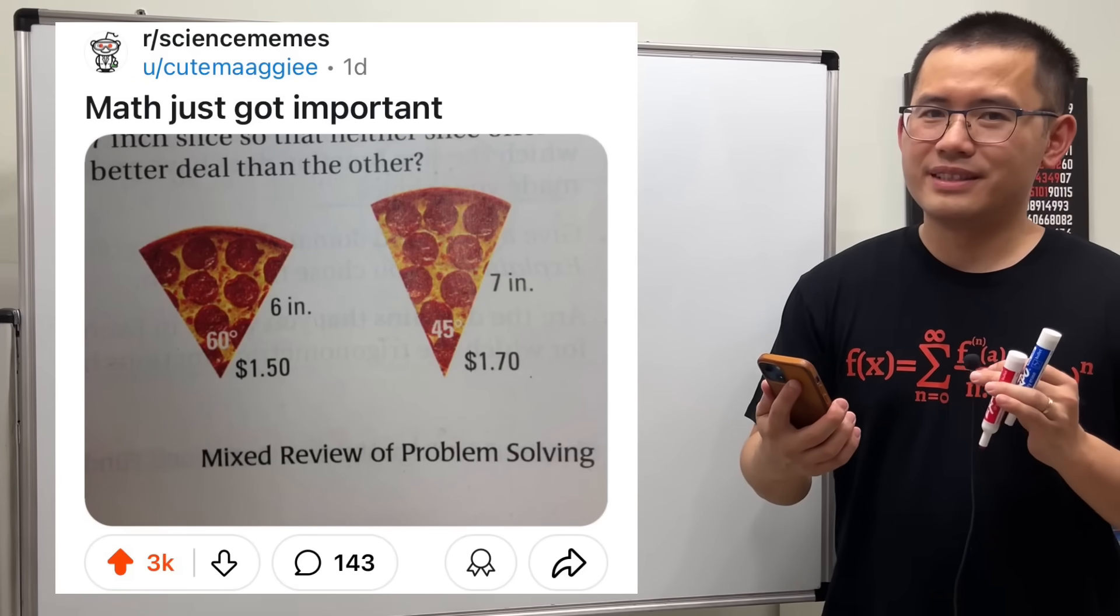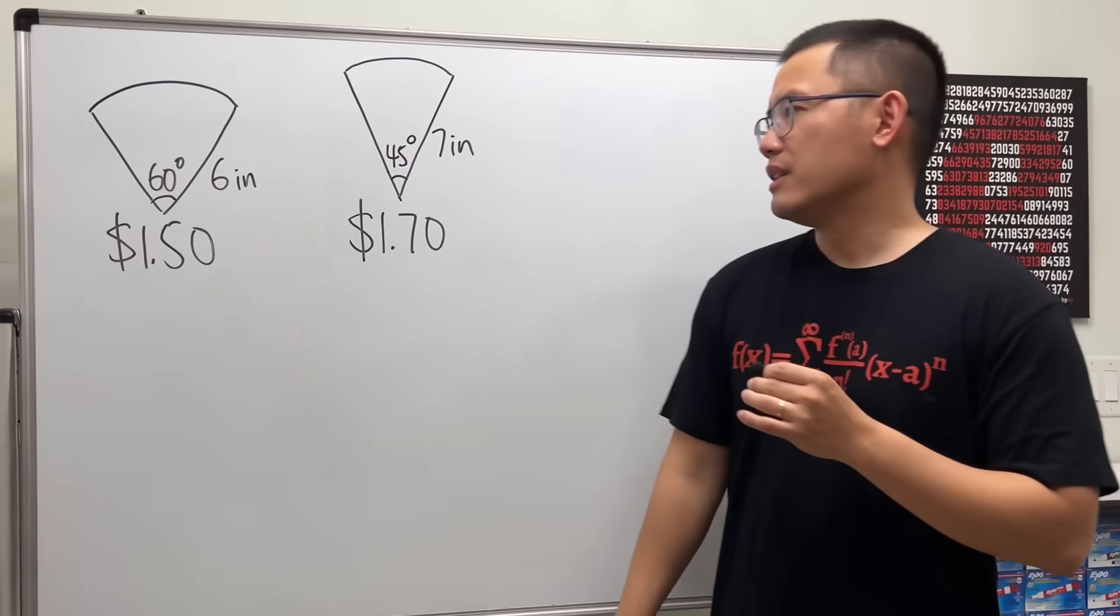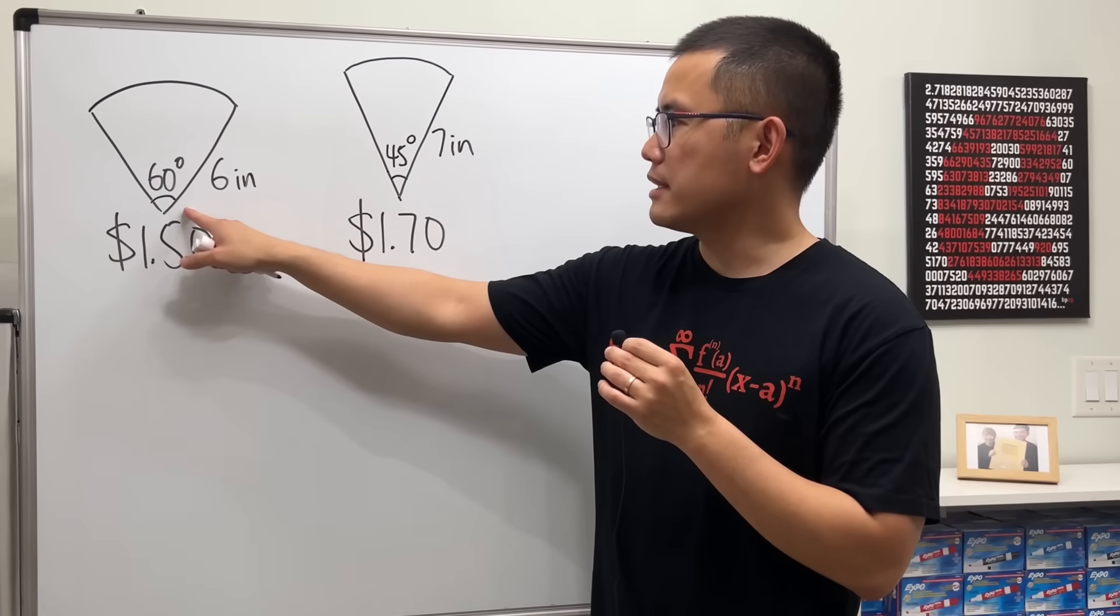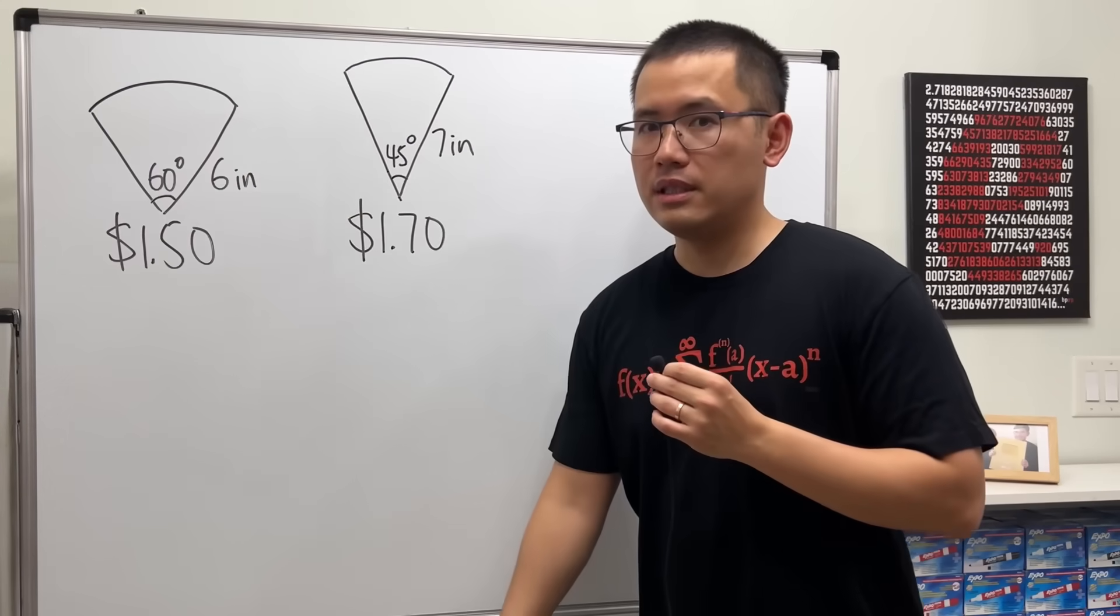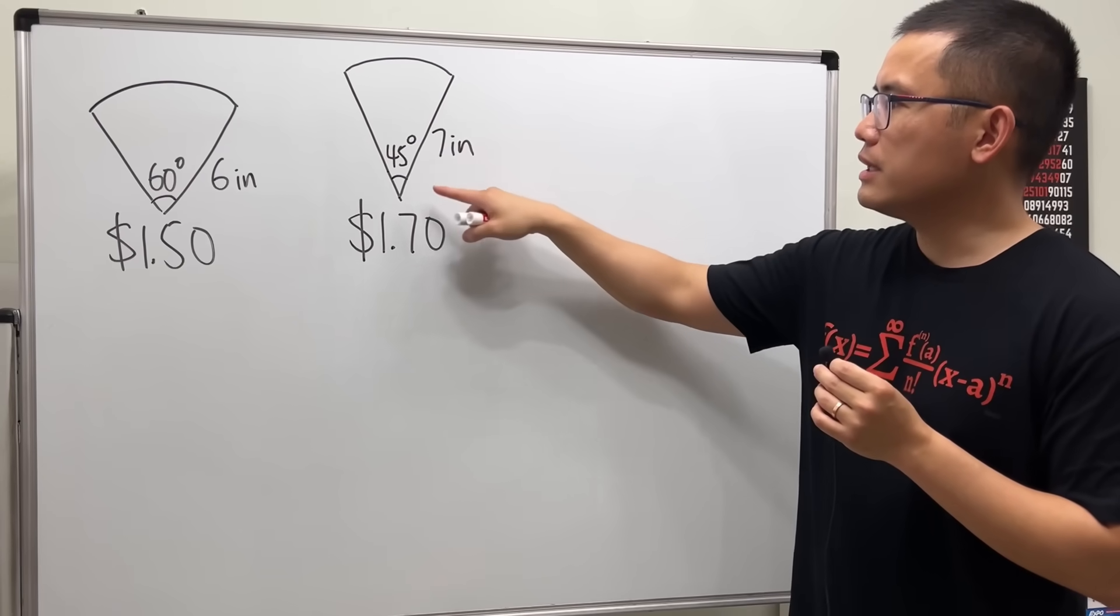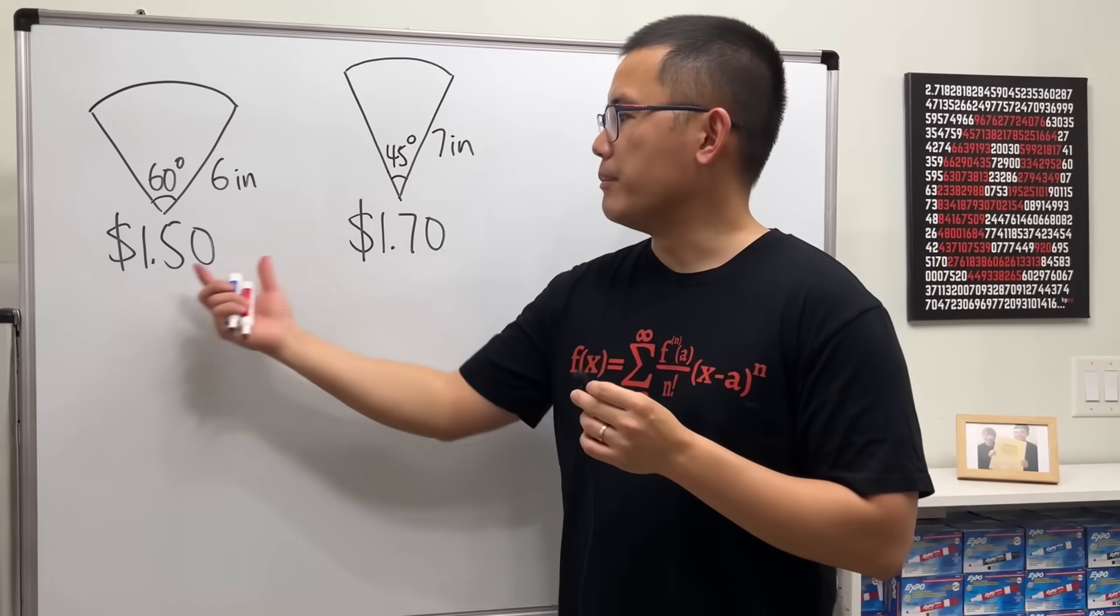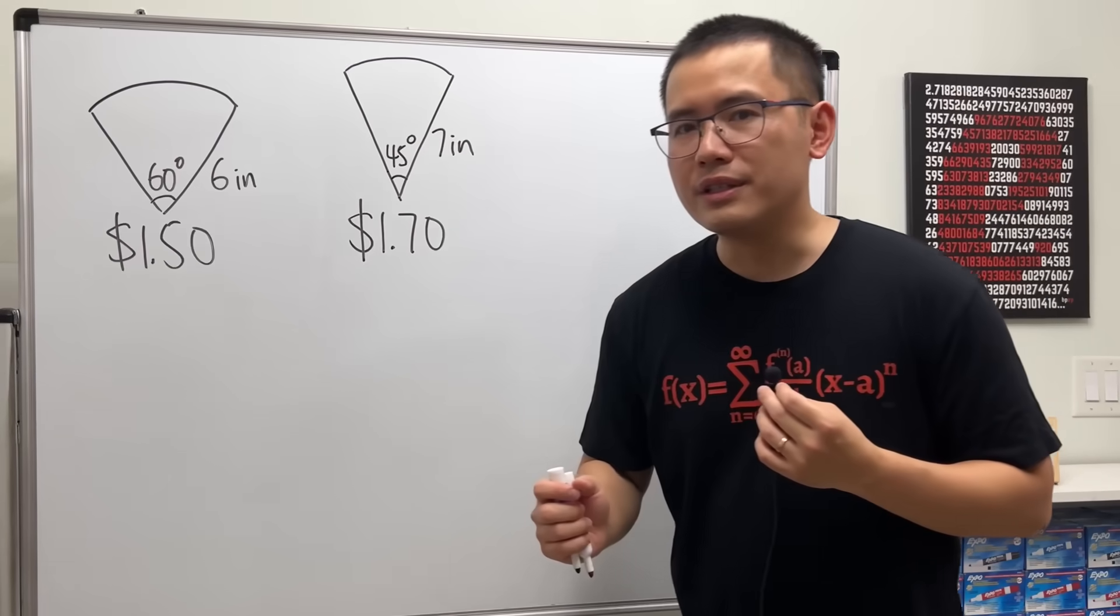Math just got important. Okay, let's take a look here. We have these two slices of pizza. The first one has a six-inch radius and a 60-degree angle. And for the second one we have a seven-inch radius and a 45-degree angle, and they have different prices. The question is which one is a better deal?